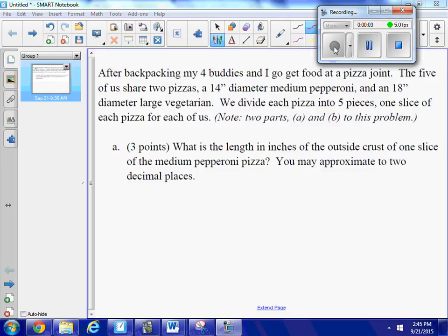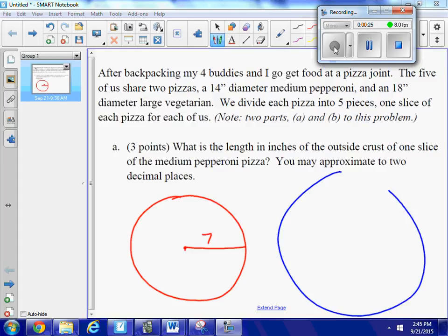After we go backpacking, my four buddies and I go to a pizza joint to get some pizza. We share two pizzas - the five of us share two pizzas. One of them is a 14-inch pepperoni, so 14-inch diameter means I have a seven-inch radius, and the other is an 18-inch large vegetarian.